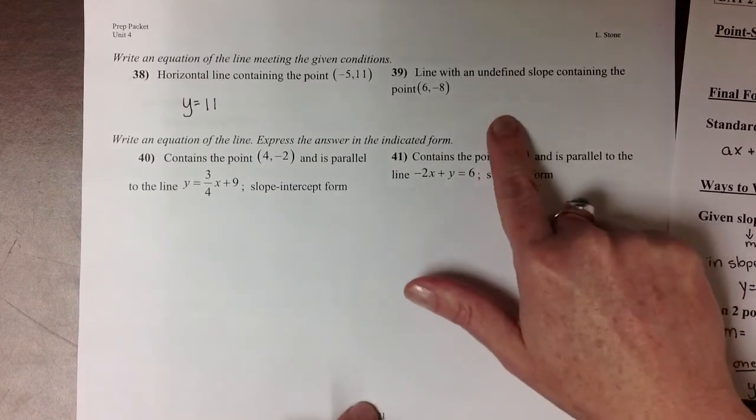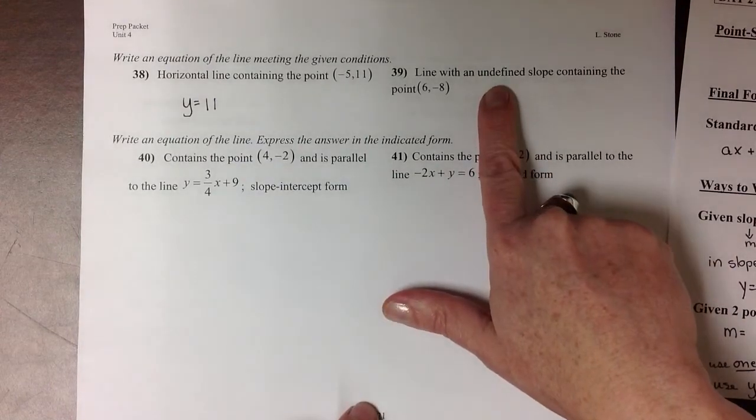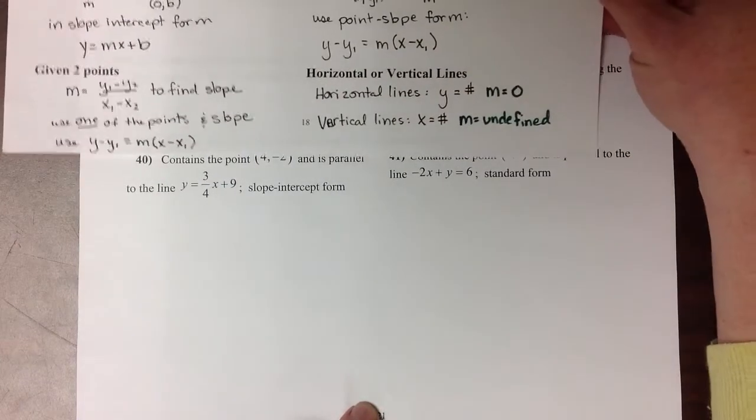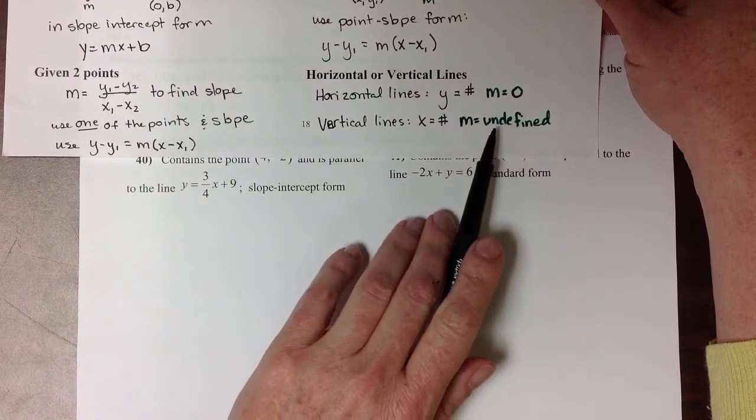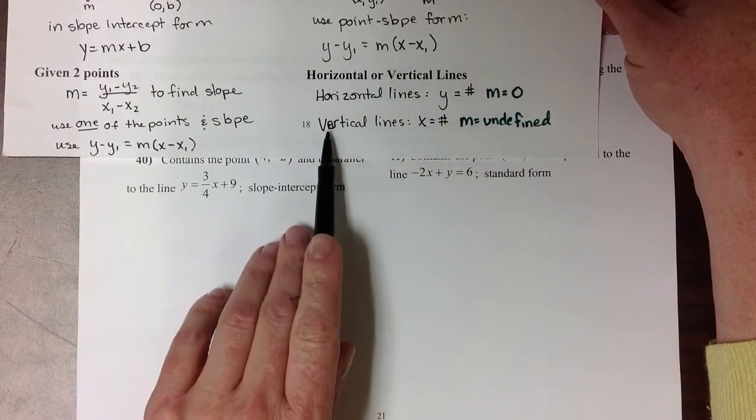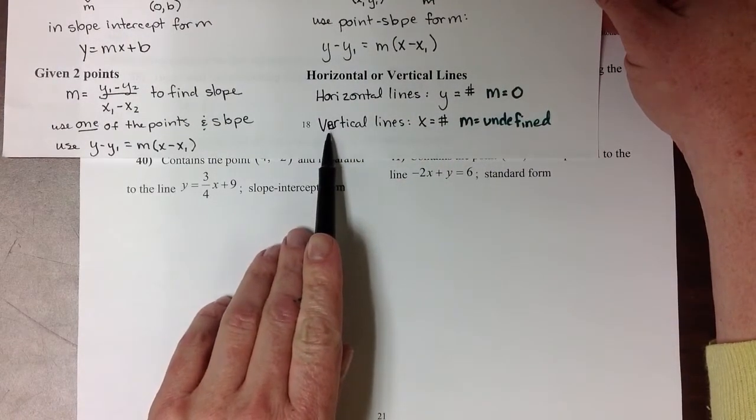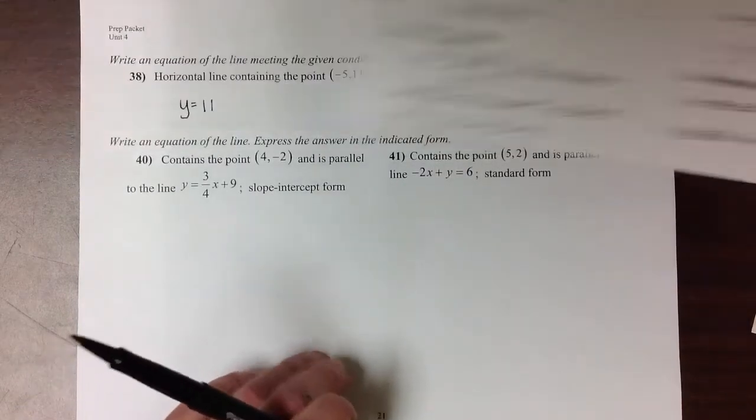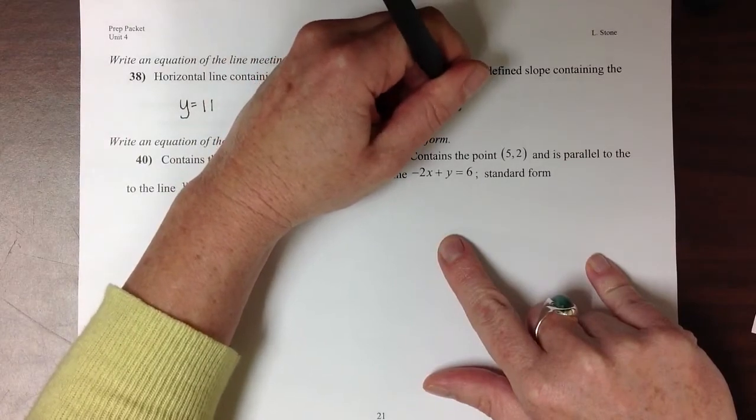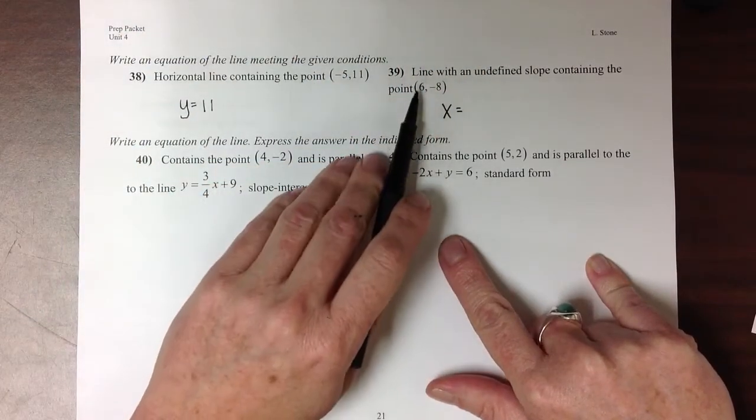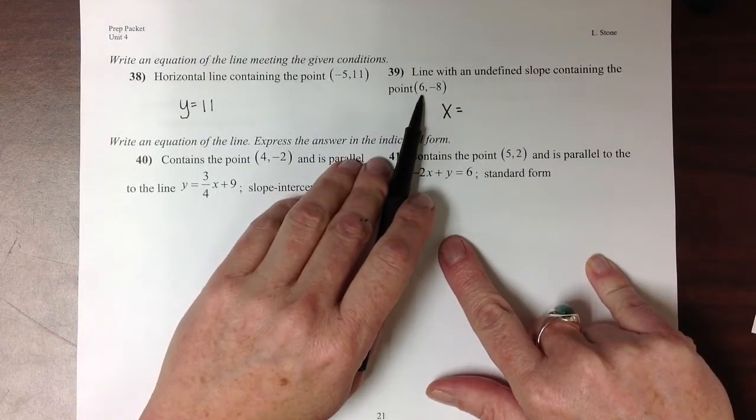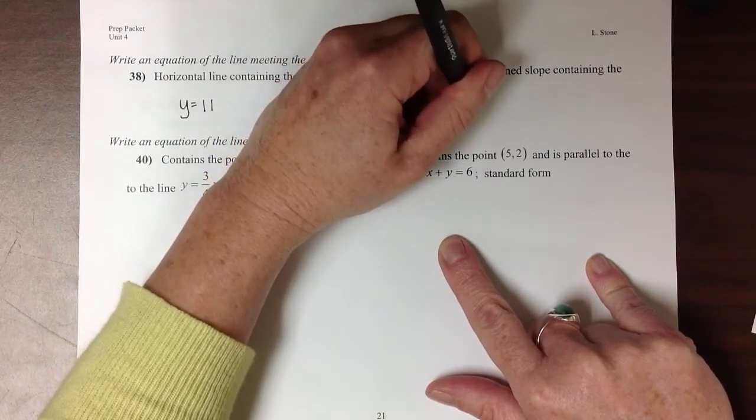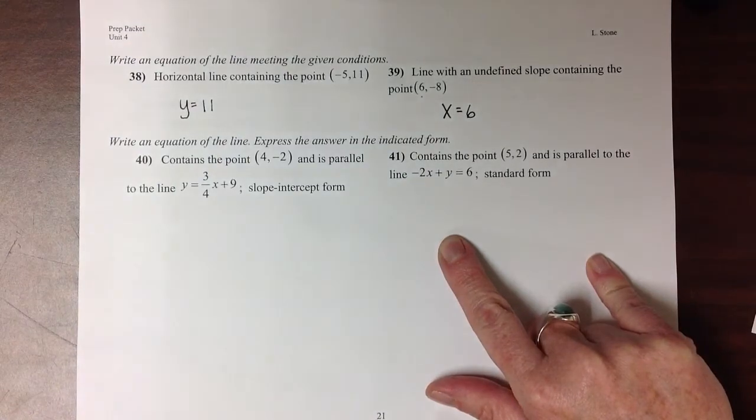For number 39, they tell us that this line has an undefined slope. So looking back at our chart again, lines that have undefined slopes are vertical lines. So this equation is going to come in the form x equals some kind of number. So we'll start with an x equals and then look at our point to see what the x value needs to be. Since 6 is in the x spot, our equation for this is just x equals 6.